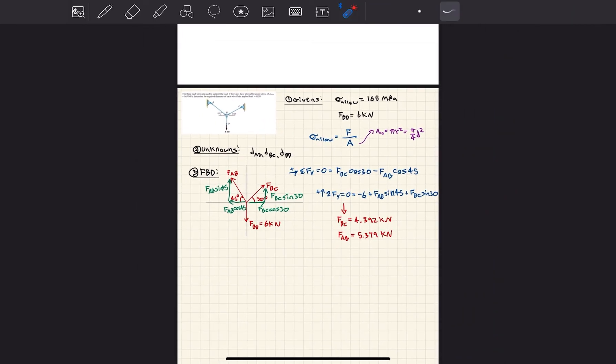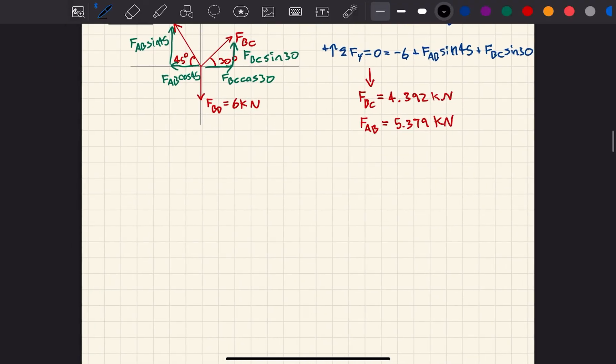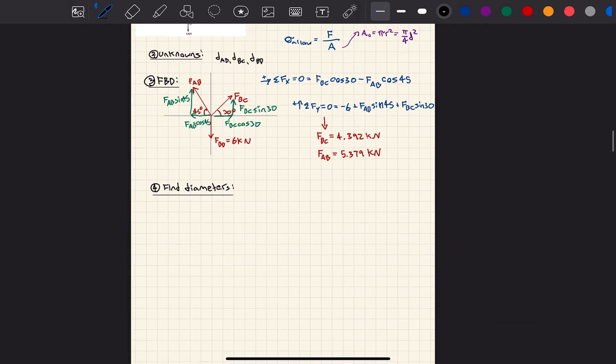Now we have the force of wire BC, the force of wire AB, and the force of wire BD. We said all we needed was those forces. We already have sigma, so we can easily find the diameter for each wire. That is what we're going to do. Find diameters.